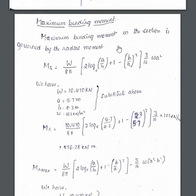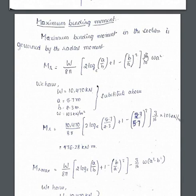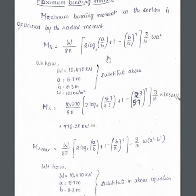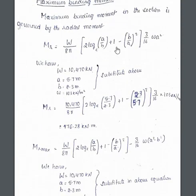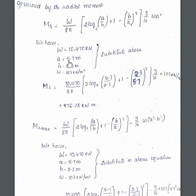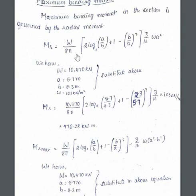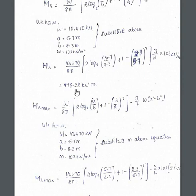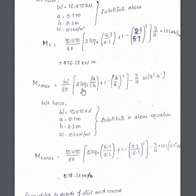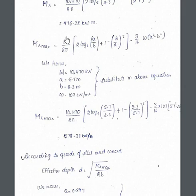The maximum bending moment is governed by the radial moment. The formula is: Mr = (w/8π) × [2 log_e(a/b) + (1 − (b/a)²) × (3/16) × w × a²]. With a = 5.7 m and b = 2.3 m, substituting all values gives the radial bending moment as 476.28 kN·m.